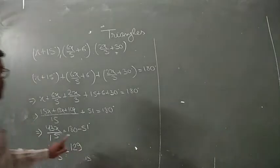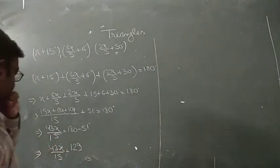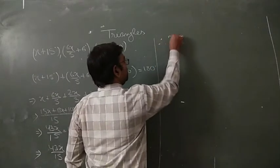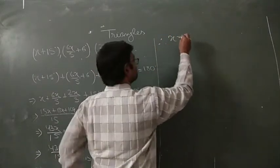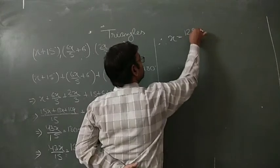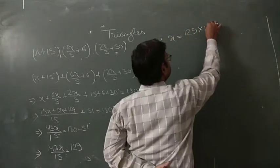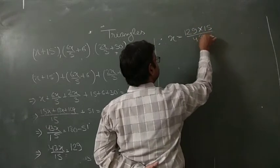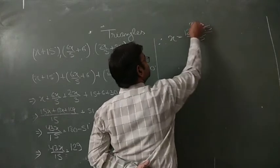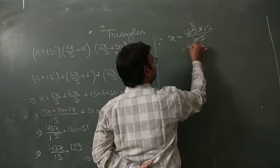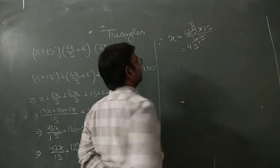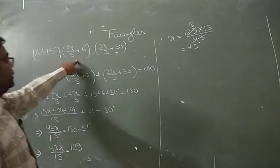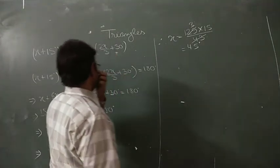From this we can find the value of x. Therefore x equals 129 multiplied by 15 upon 43, and 43 cancels to give x equals 45 degrees.